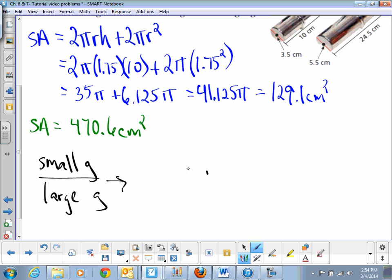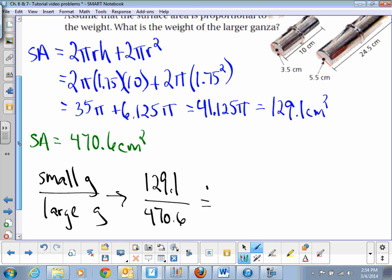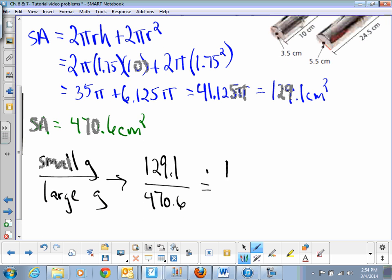We can just do the surface area of the small gonza, which we found out was 129.1, over the surface area of the large gonza. Notice how I'm keeping it consistent: surface area over surface area, so 470.6 equals small gonza. What else do we know about the small gonza? It weighs about 1.1 pounds, so 1.1 lbs. And then we don't know that. Using cross products, we would then get 129.1x equals 470.6 times 1.1 equals 517.66.